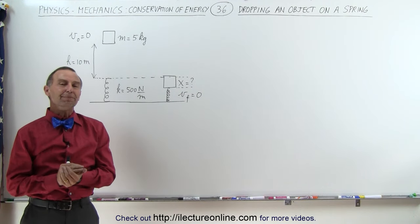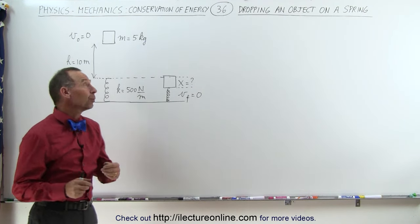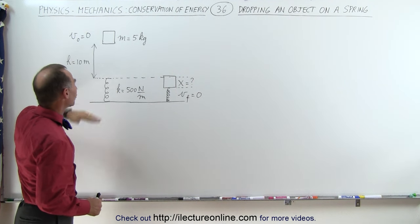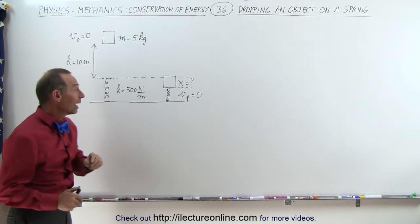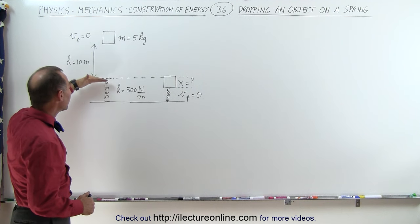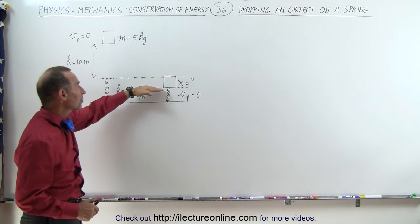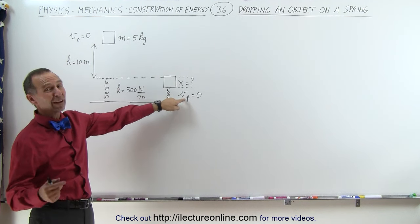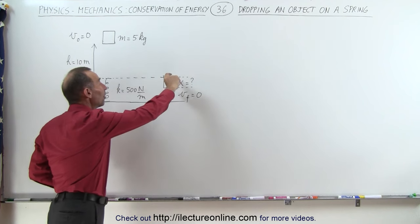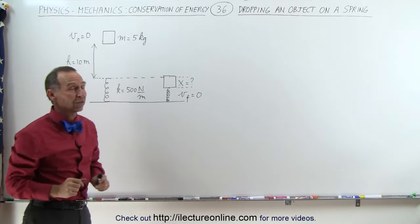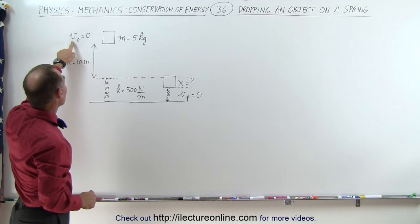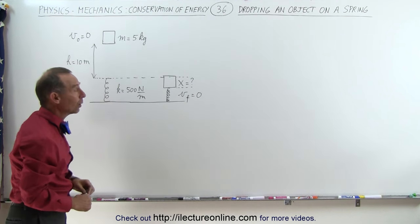Welcome to our lecture online. Here we have an interesting problem where we're dropping an object from a height of 10 meters onto a spring. The spring has a spring constant of 500 newtons per meter and will be compressed a certain distance before the object comes to complete rest with a final velocity equal to zero. And the question is, how far has the spring been compressed? The mass is five kilograms and the object starts at rest as well.